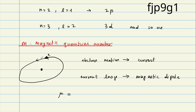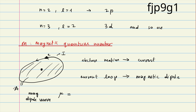The magnetic dipole moment is μ = I × A, current times area. If I give you the current I and the area of the orbit, the magnetic dipole moment is just I times A.